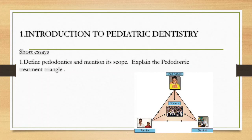The first chapter is introduction to pediatric dentistry. The first question was: define pedodontics and mention its scope, and explain the pedodontic treatment triangle. The pedodontic treatment triangle is a very commonly asked question, where the child is at the apex and the family and the dentist are at the other two corners. An adult requires a service to be carried out in his mouth, and if not satisfied, he will seek satisfaction elsewhere, whereas a child attends the dental service because he is forced to do so.